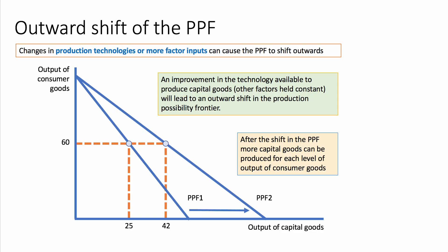Here's an example of an outward shift in the PPF. I've drawn a linear PPF — often times they're drawn as a curve, but this is a linear one. For example, an increase in the amount of technology available to produce capital goods would shift the PPF out from PPF1 to PPF2, and that will be an increase in a country's productive potential.